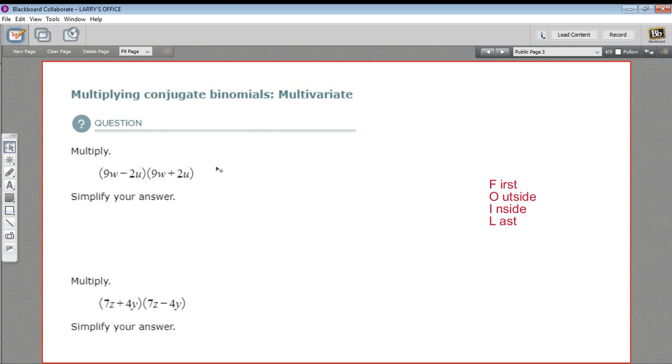In these problems, we are multiplying binomials, and in this case, the binomials are something called conjugates. That is, they have the same numbers and letters in the same arrangement, and the only thing that's different is the sign between them. So here we have 9w minus 2u times 9w plus 2u, and there's actually a special pattern that happens when you multiply conjugate binomials.